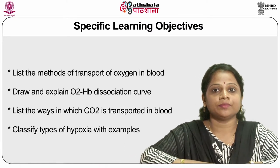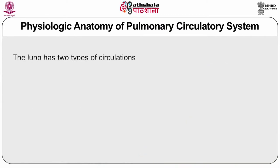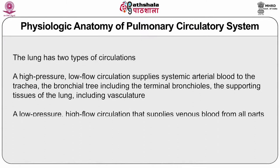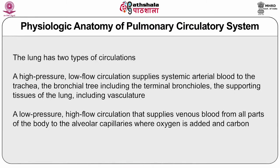Other objectives are: list the ways in which CO2 is transported in blood and classify types of hypoxia with examples. The lung has two types of circulation. First is high pressure and low flow circulation, which supplies systemic arterial blood to the trachea, the bronchial tree including terminal bronchioles, and the supporting tissue of the lung. Second is low pressure, high flow circulation that supplies venous blood from all parts of the body to the alveolar capillaries where oxygen is added and carbon dioxide is removed.